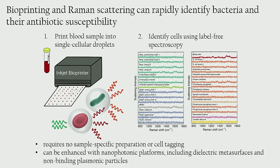Our approach is to expedite this process, potentially to the point of care, so that we can rapidly and sensitively detect bacteria in complex samples like blood, mucus, urine, and potentially even food and water. The idea is to take the sample and print it out into a two-dimensional array where each pixel corresponds to a single cellular droplet. We then take a picture of this two-dimensional array where the spectrum or the color of each pixel corresponds to the particular type of cell in that pixel, as well as its species, strain, and antibiotic susceptibility.